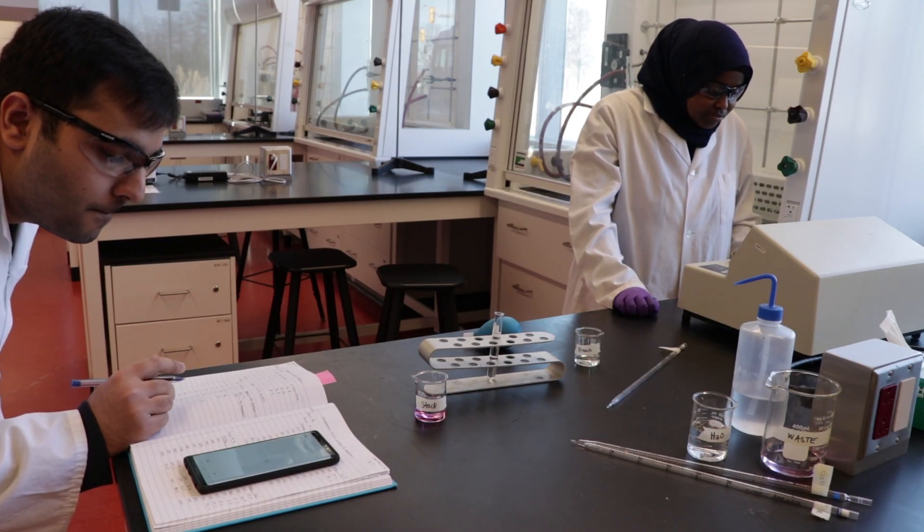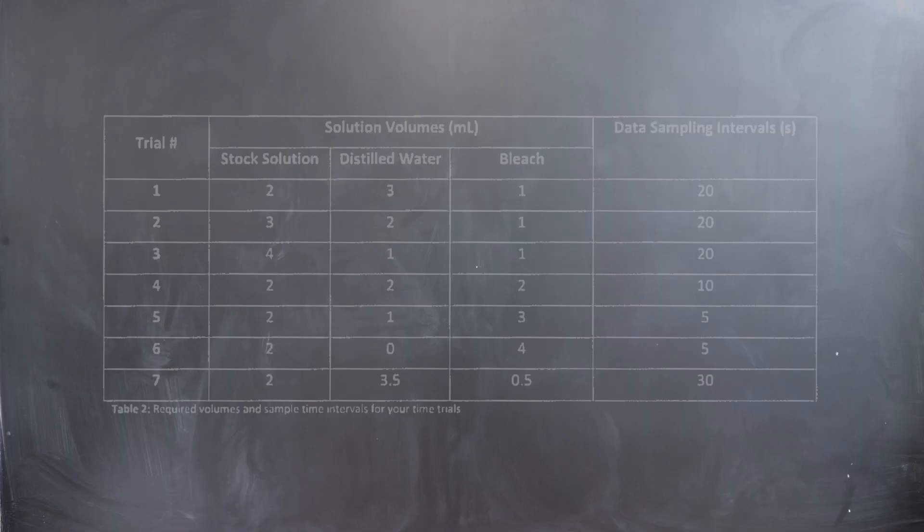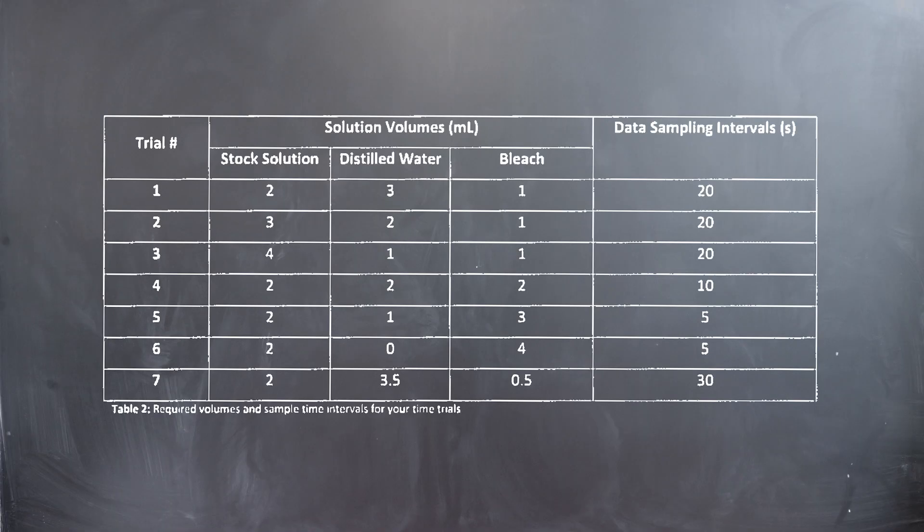Vary the interval at which you record the transmittance according to the table in your lab manual. Once you recorded all your kinetic data, you will be ready to generate your graphs using Excel.